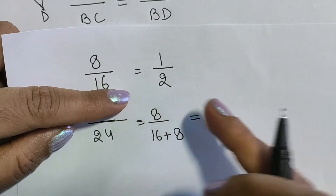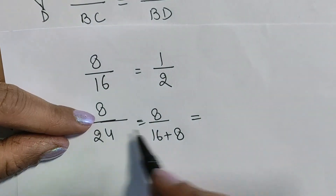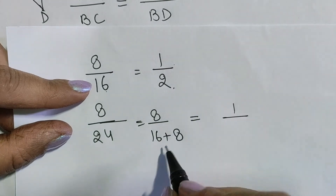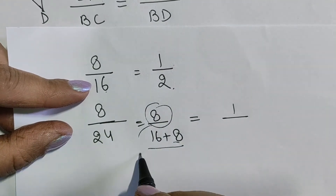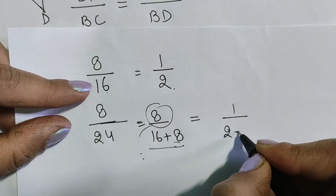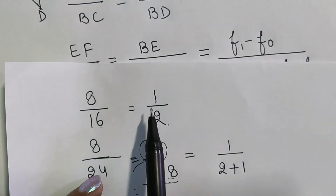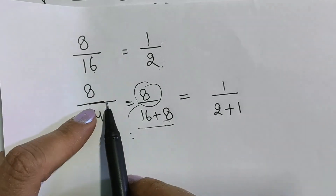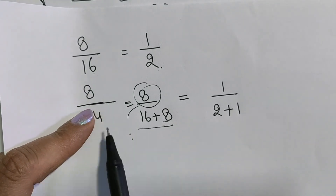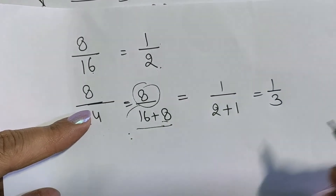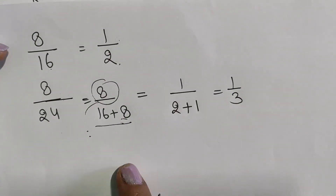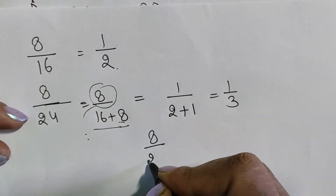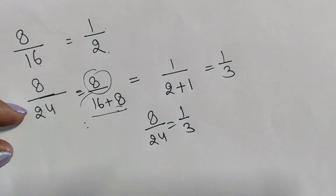To understand this simplification, consider the analogy: 8/16 = 1/2, and 8/24 = 8/(16+8). Since we already know the ratio 8/16 = 1/2, we write 1/(2+1) = 1/3, which is the ratio 8/24. We have applied the same logic here — writing BD as BE + ED and using the known ratio of BE/ED.